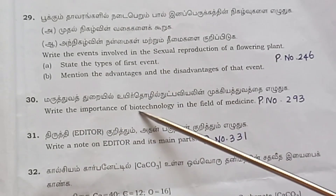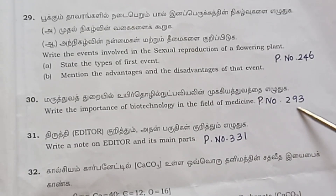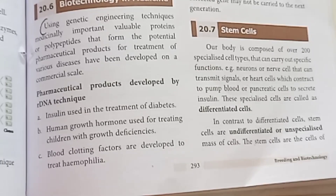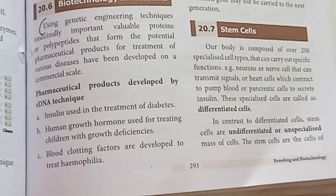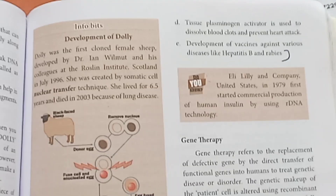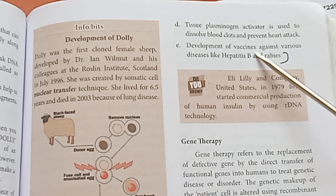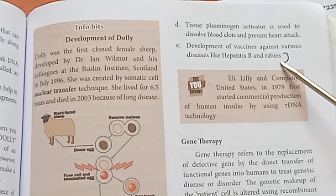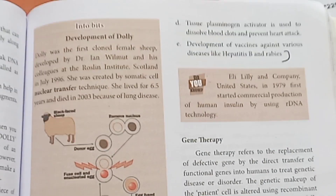Question 30: Write the importance of biotechnology in the field of medicine. Page number 293. Using genetic engineering techniques, including the development of vaccines against various diseases like hepatitis B and rabies.